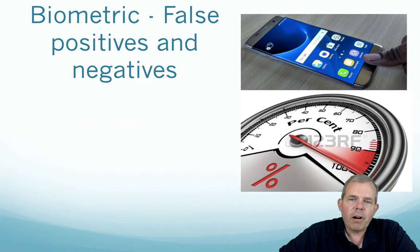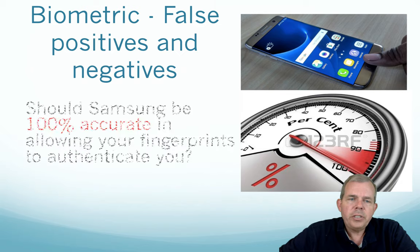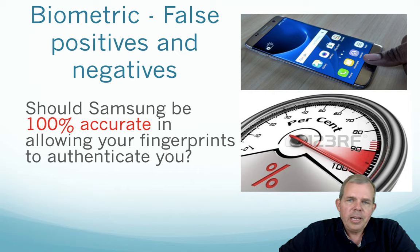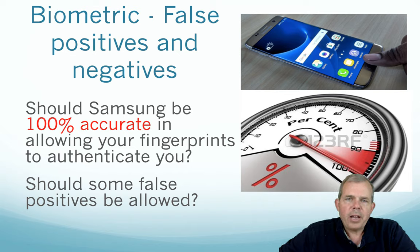Now the problem with biometrics is that there are false positives and false negatives. You've probably been frustrated by your phone — you try to press your fingerprint on it and it doesn't read it repeatedly. Should Samsung be 100% accurate in registering your fingerprint, or should there be some margin of error? If your fingerprint registers all the time and immediately, does that mean your friends could also use your phone? Should some false positives be allowed? I think the answer has to be yes, because they would annoy their customers too much if they were very picky. They're getting better at it — they don't want to just let everybody into the phone, but they're more accurate than they used to be.